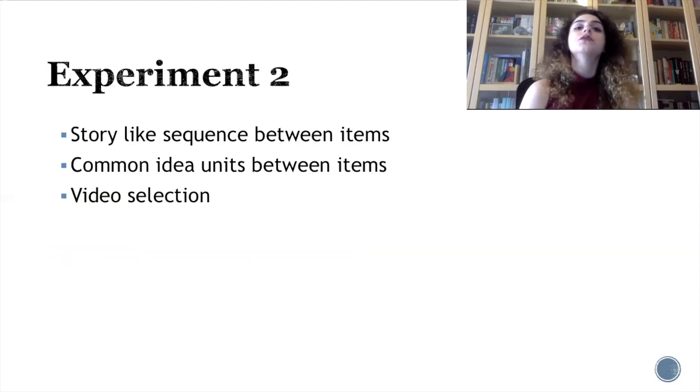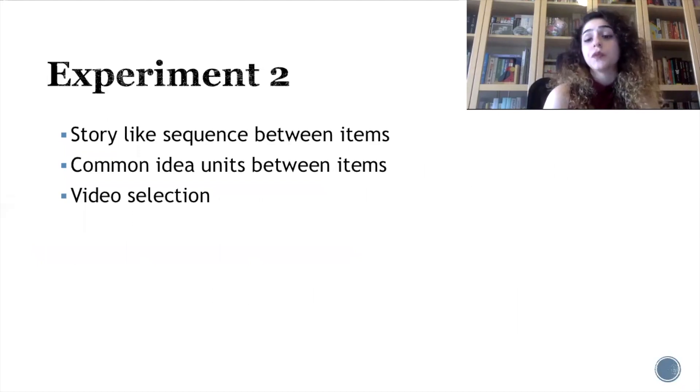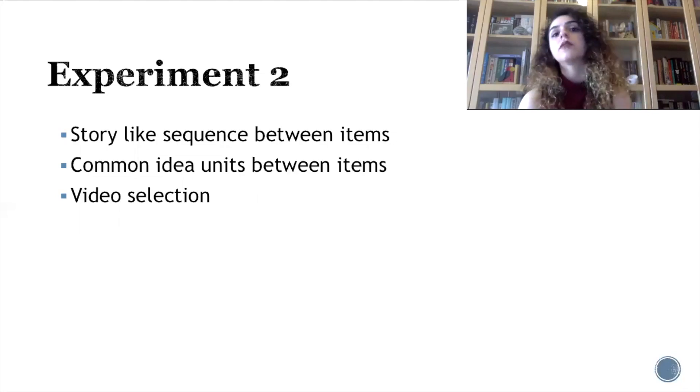And there are two critical factors in experiment one that might contribute to the results. So, in experiment two, we addressed those. First one was the story-like cycles between items. This might make participants refer to their scripts about cooking, which in turn might have affected their JOLs and memory. And the second one was common idea units between recipes.